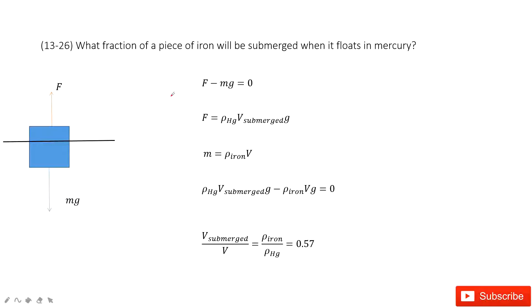In this problem we have an object, a piece of iron. It will be submerged when it floats in mercury. We need to find the fraction of the volume that will be submerged in mercury.